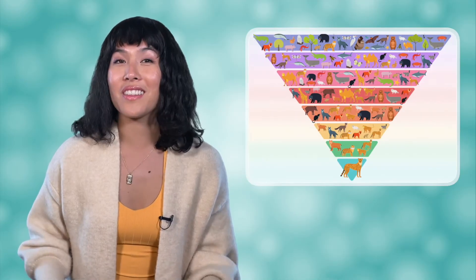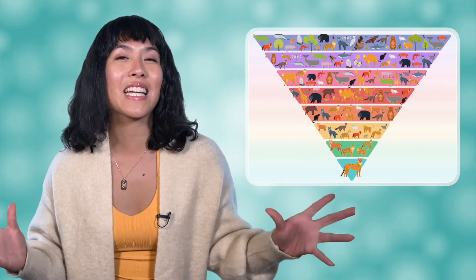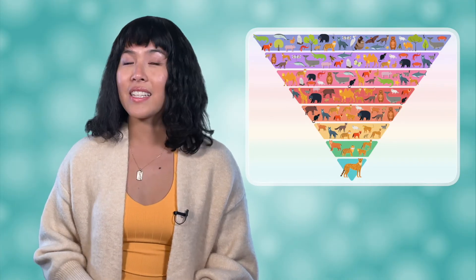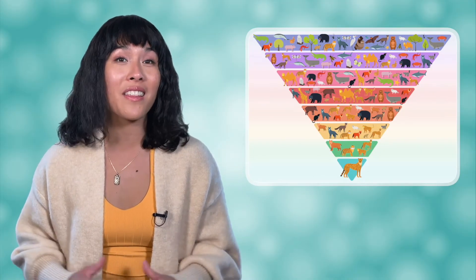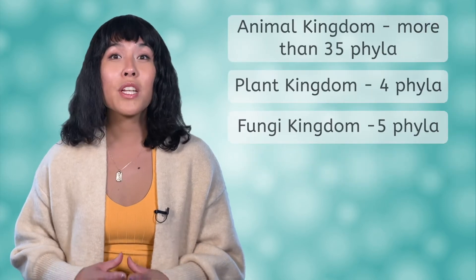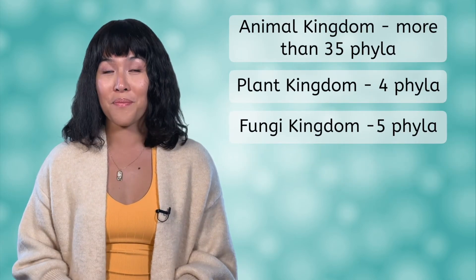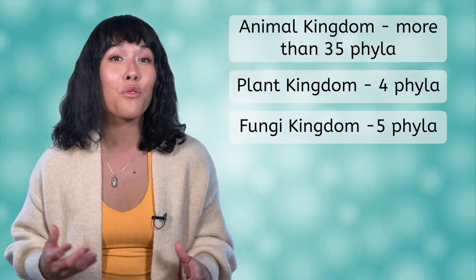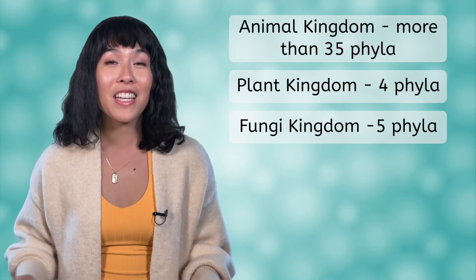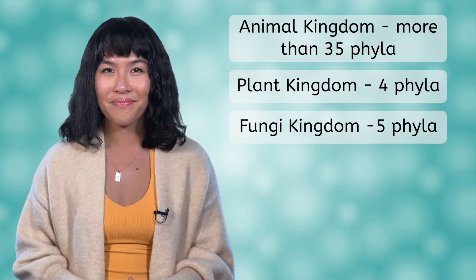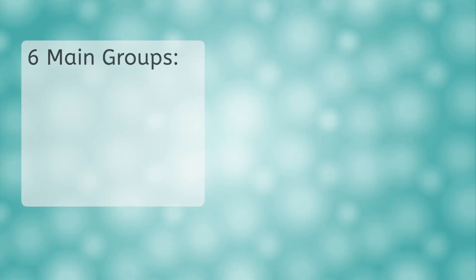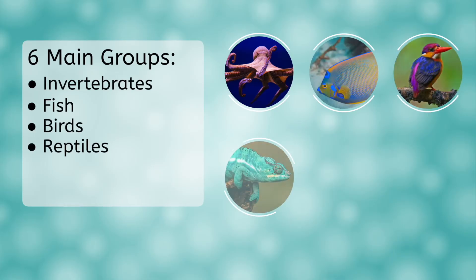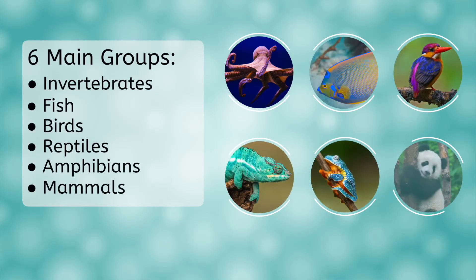We mentioned earlier that the Kingdom Animalia is the largest kingdom of organisms. Scientists aren't in complete agreement on the number of phyla that make up the kingdom, but we do know that there are over 35 of them. This is compared to only four in Kingdom Plantae and five in Kingdom Fungi. In this unit, we will be focusing on six main groups of animals that encompass all of the phyla: invertebrates, fish, birds, reptiles, amphibians, and mammals. Let's spend a little time talking about each group.